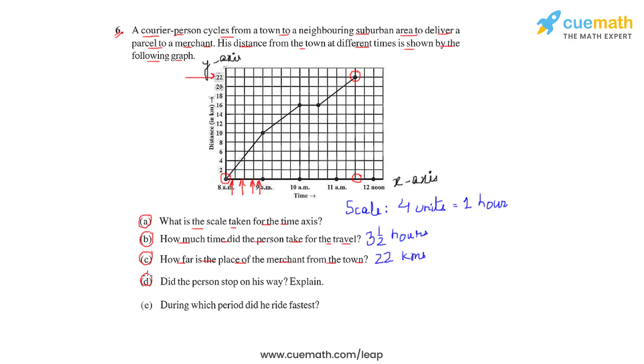Now moving on to the next question, which is question (d). We'll have to examine whether the person stopped on his way and we'll also have to give an explanation for this. If we observe the horizontal axis, we see that during the interval from 10 am to this point, the distance covered is not increasing.